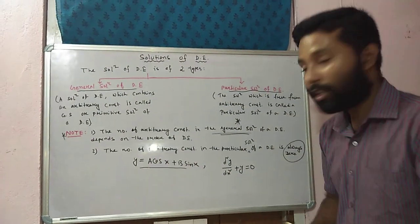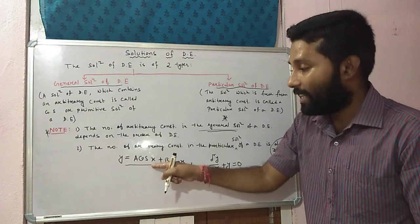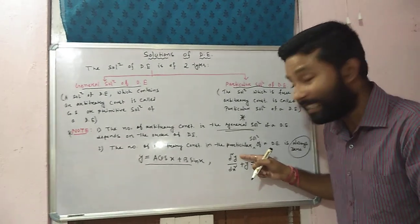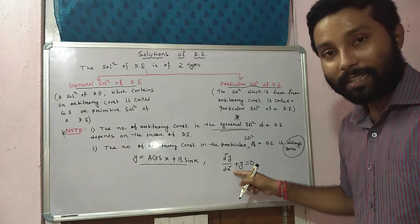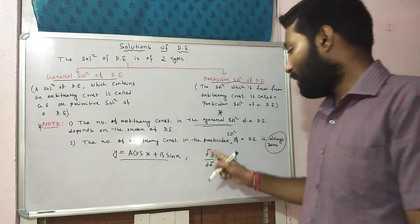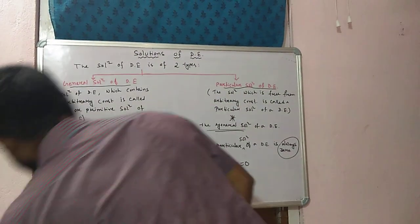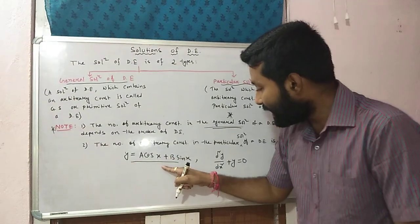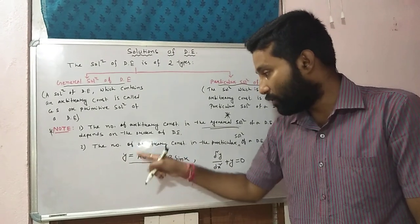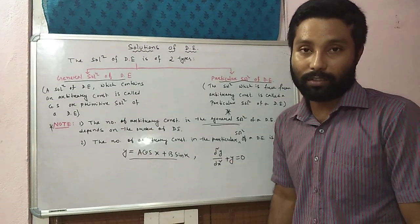This is a function, or you can say an equation. And d²y/dx² + y = 0 is the differential equation. It is a differential equation because there is one dependent variable and one independent variable. My question is whether this function y = a cos x + b sin x is the solution of this differential equation or not. Let us check.